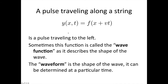For a pulse traveling in the negative direction — to the left — we actually put a positive sign. Some terminology worth mentioning, particularly for later when we get into quantum mechanics: this function is sometimes called a wave function, and it describes the shape of a wave — the height at each point. The waveform is the shape of the wave determined at any particular time. So f(x) at a given time tells us the height at every point — that is known as a waveform.